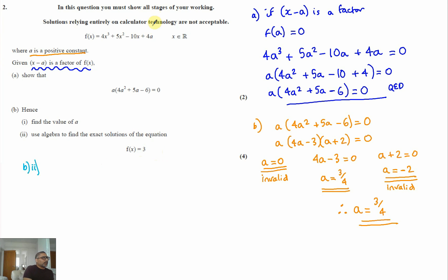Well, now we know what a is. Let's rewrite that. So it would be 4x cubed plus 5x squared minus 10x. And then you've got 4 times a. We know a is 3 quarters. 4 times 3 quarters would just be 3. So it would be plus 3 equals 3. Which means those two cancel out. So we've got 4x cubed plus 5x squared minus 10x equals zero.